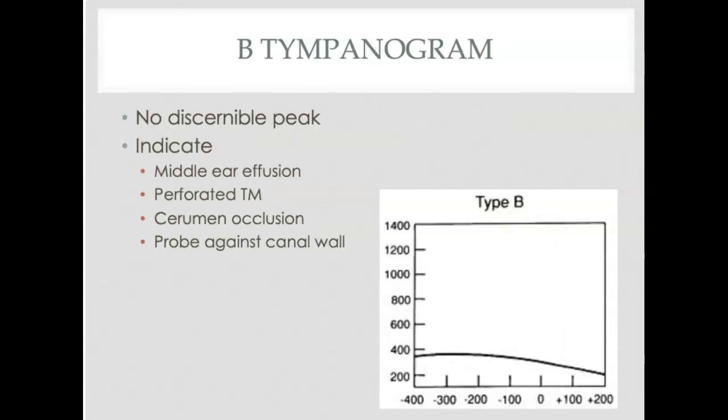The flat tympanogram is a type B. There's no discernible peak. You don't have a peak pressure with a type B tympanogram. You have a flat, essentially, tympanogram with no peak. Very common with middle ear effusion, perforated tympanic membranes, cerumen occlusion, or if they're testing it wrong and they have the probe up against the wall. A lot of first year AuD students do that.